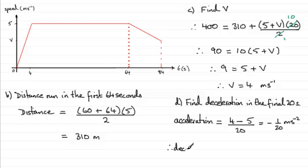So therefore, we just say that the deceleration equals 1/20 of a meter per second per second.